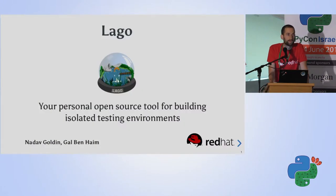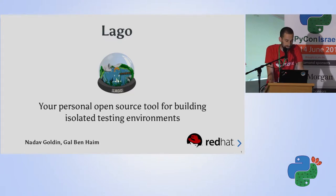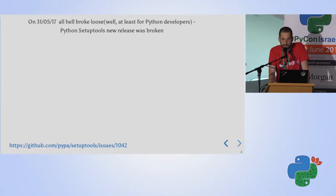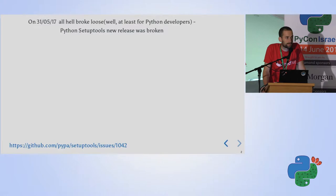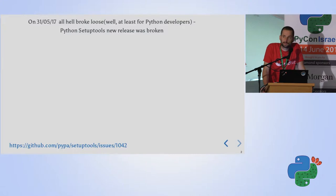Hey everyone, happy to be here. Today we're going to talk about LAGO, our open source project. But first, we'll start with a little story. Around two weeks ago, when I was preparing the slides for this lecture, I woke up in the morning and saw that LAGO's builds were broken. LAGO is a Python project, and the first thing I thought was that I must have pushed too many commits during the night and broke something — which is usually what happens.